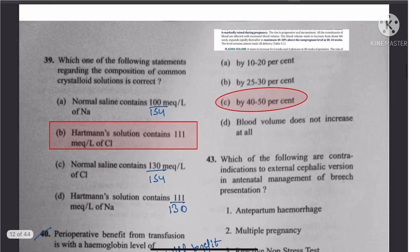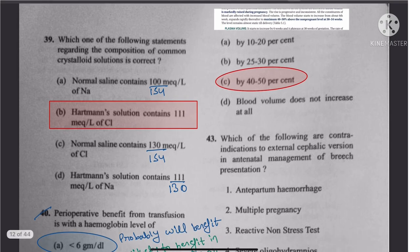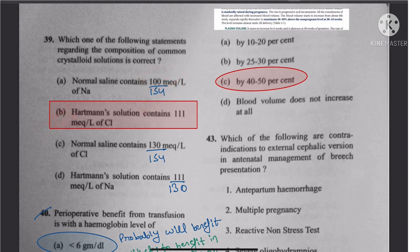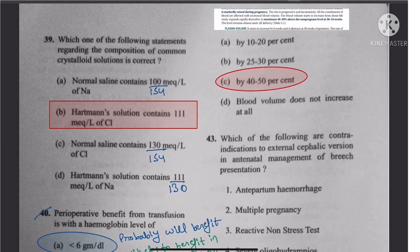Question 39: Regarding common crystalloid solutions — instead of 100 it should be 154 mEq/L. The second statement is correct. In the third it should be 154, and in the fourth it should be 130. The correct statement is the second one.